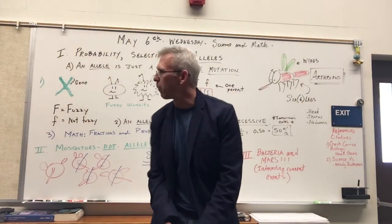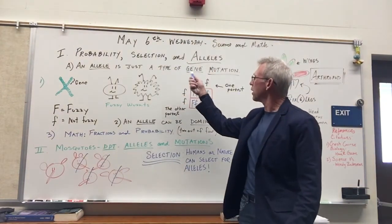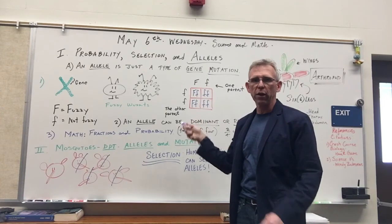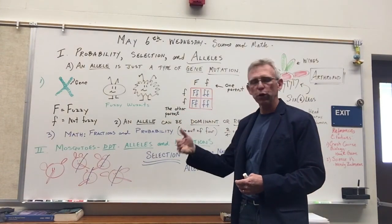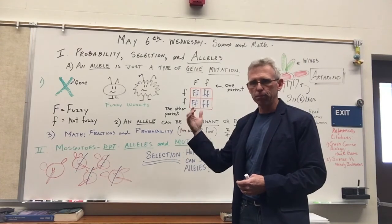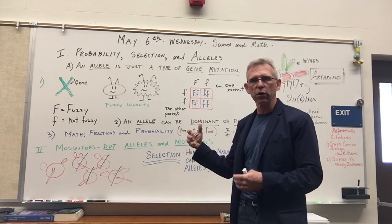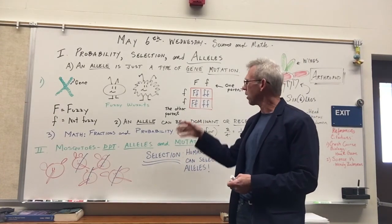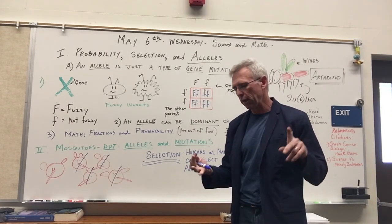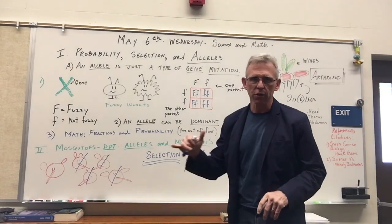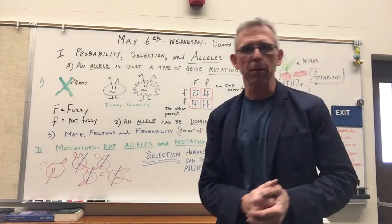So, quick recap. We did a little bit with probability, selection, and alleles. The word of the day really is allele. Allele is just a form of a gene. And you can figure out the genotype, you can figure out the genes a person has based on probability, which is really awesome. Check out the notes on Google Classroom and also on the blog. Talk to you later. Looking forward to seeing you all back in class. Bye-bye.